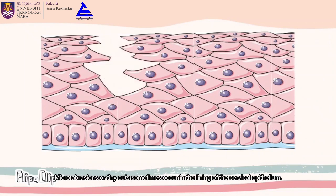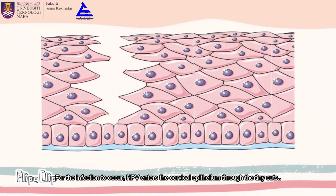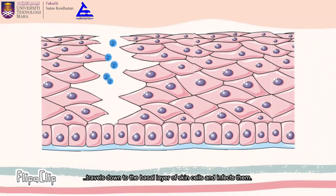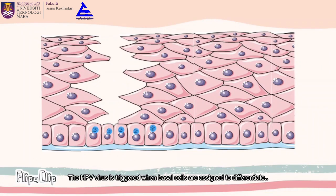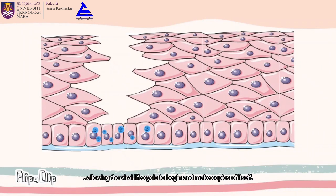Micro-abrasions or tiny cuts sometimes occur in the lining of the cervical epithelium. For the infection to occur, HPV enters the cervical epithelium through the tiny cuts, travels down to the basal layer of the skin cells and infects them. The HPV virus is triggered when basal cells are assigned to differentiate, allowing the viral life cycle to begin and make copies of itself.